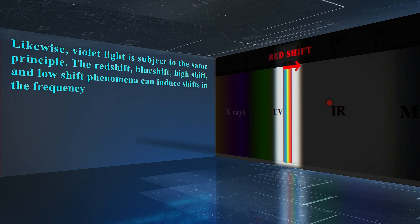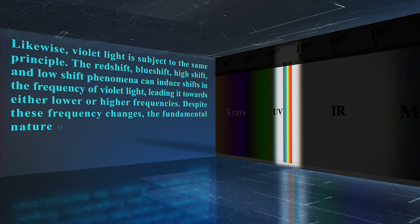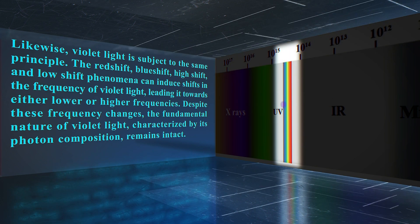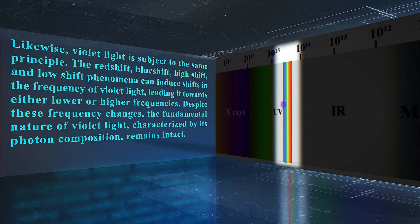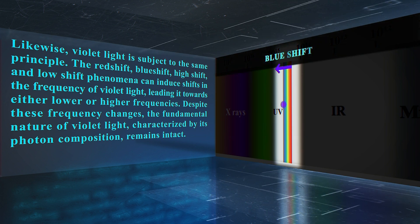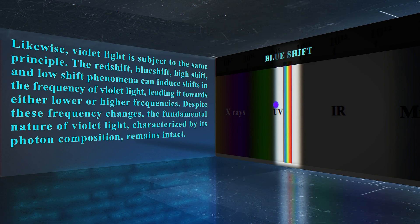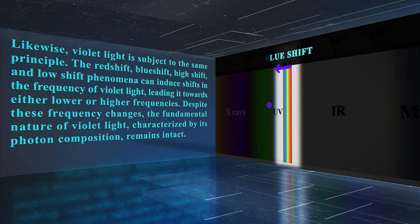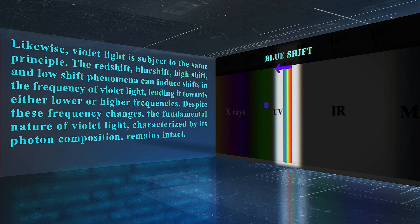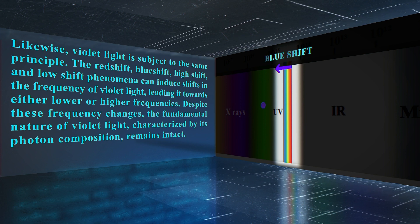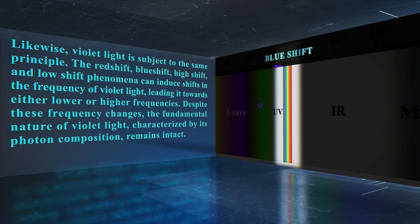Likewise, violet light is subject to the same principle. The redshift, blueshift, highshift, and lowshift phenomena can induce shifts in the frequency of violet light, leading it towards either lower or higher frequencies. Despite these frequency changes, the fundamental nature of violet light, characterized by its photon composition, remains intact.